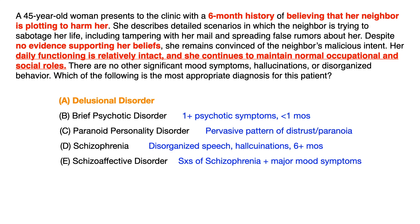Lastly, choice E, schizoaffective disorder, is in a nutshell schizophrenia plus major mood symptoms — either major depressive or bipolar symptoms. This question clearly states there are no other significant mood symptoms, so you can eliminate schizoaffective disorder as soon as you read that.